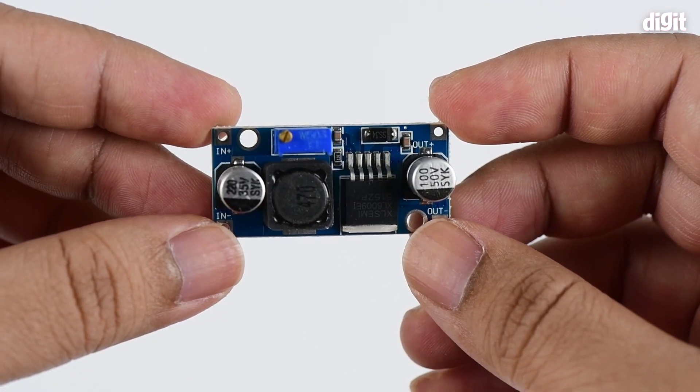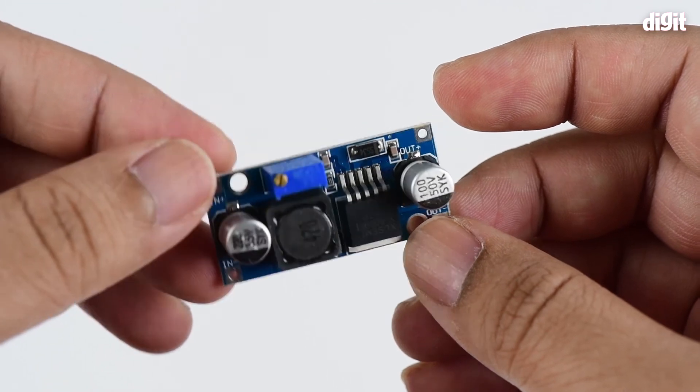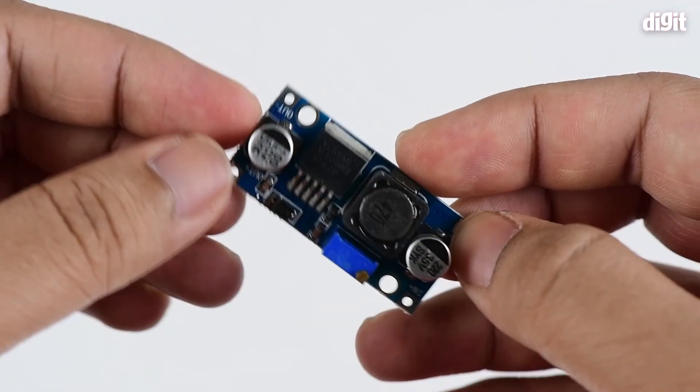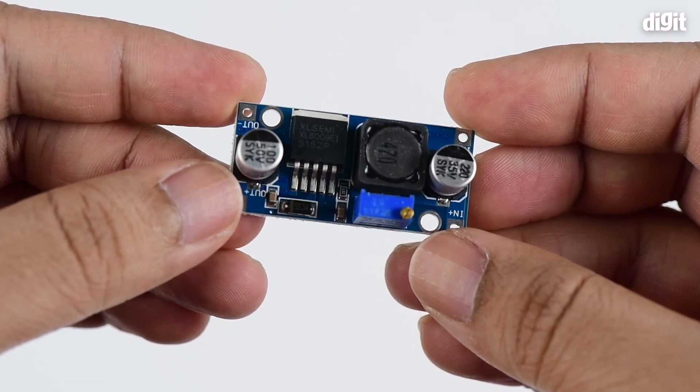So that was a really brief quick summary of how the XL6009 switching mode power supply works. Thank you for watching.